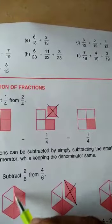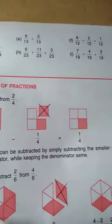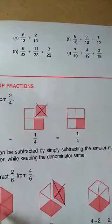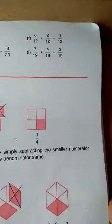2 by 6 means these 2, any of the 2 shaded portions. Then remaining is, remaining only 2 shaded portions. Therefore the answer is 2 by 6.